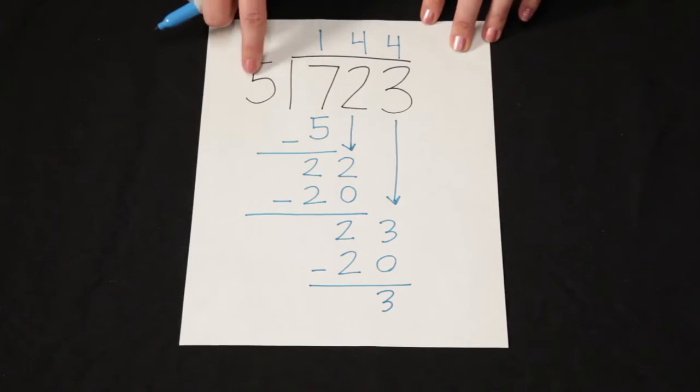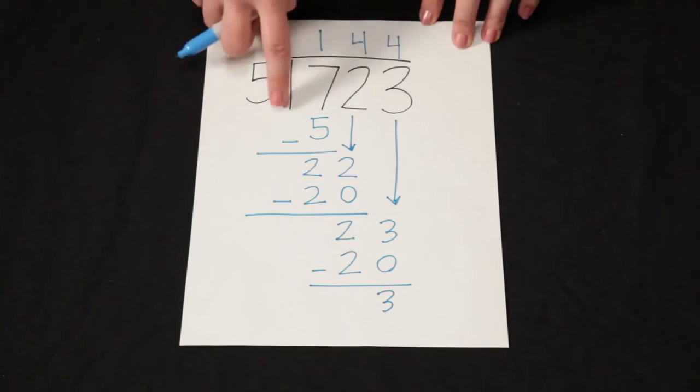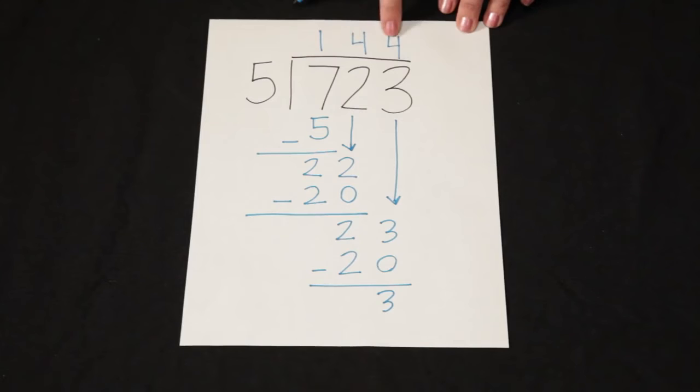So when I have 5 and I take it into 723, or I can think about that as 723 divided by 5, my answer is 144, but I can't forget this down here.